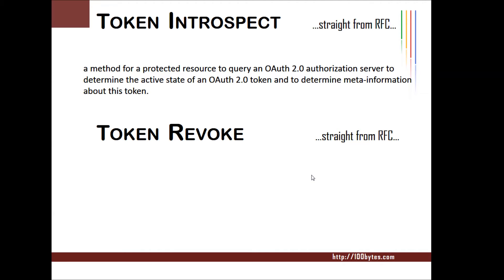Token introspection is a method provided for the resource server. Whenever it receives a token from the client to access the protected resource, before serving the protected resource it wants to check whether the received token is valid and what are the claims in the token. This can be achieved by calling the introspection endpoint exposed from the authorization server. This token introspection endpoint can be used to introspect the access token and ID token.